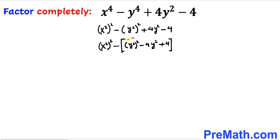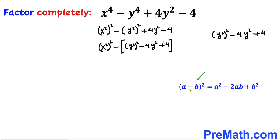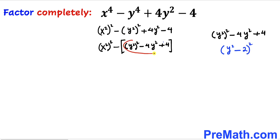Now let's focus on the trinomial inside this bracket. Let's recall the famous identity: (a minus b) whole square equals a square minus 2ab plus b square. We are going to apply this identity on the given trinomial. Here we can see 4 can be written as 2 square, so this whole trinomial inside the bracket turns out to be (y square minus 2) whole square.